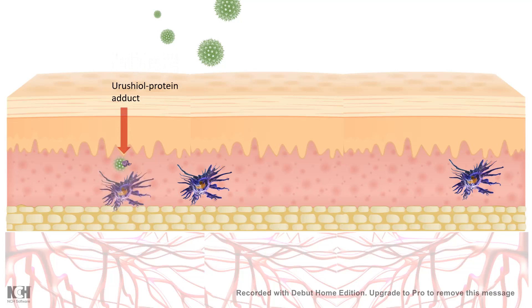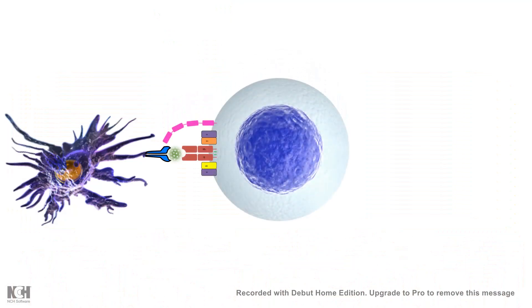This urushiol hapten adduct can be recognized by Langerhans cells and dendritic cells present in the nearby skin. The adduct is then presented to T-cells, and it is this urushiol adduct — not urushiol itself — that can elicit an immune response. This particular molecule is involved in a delayed type 4 hypersensitivity reaction. A link to that video is given in the description.